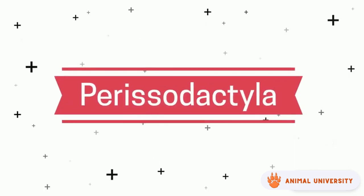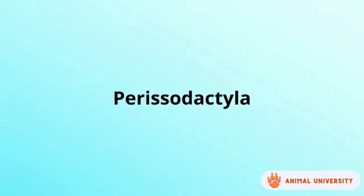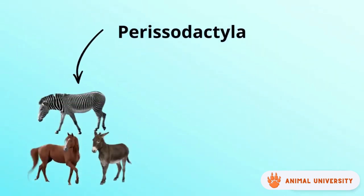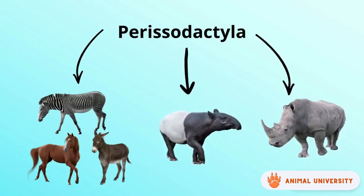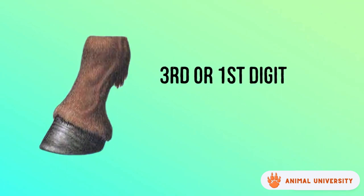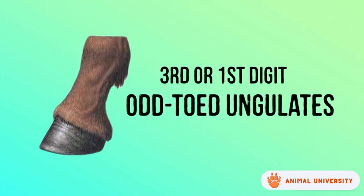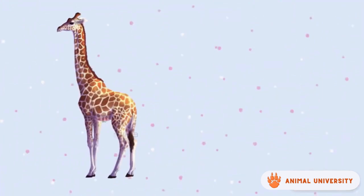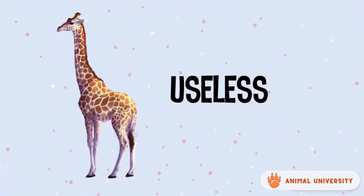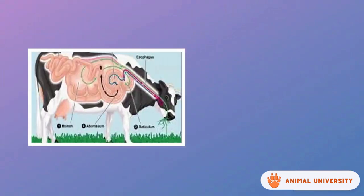Perissodactyla is the other group of ungulates. They are divided into three groups: Equidae which includes zebras, horses, and donkeys, tapirs, and rhinoceroses. They bear their weight on the third or the first digit. That's why they are known as odd-toed ungulates.